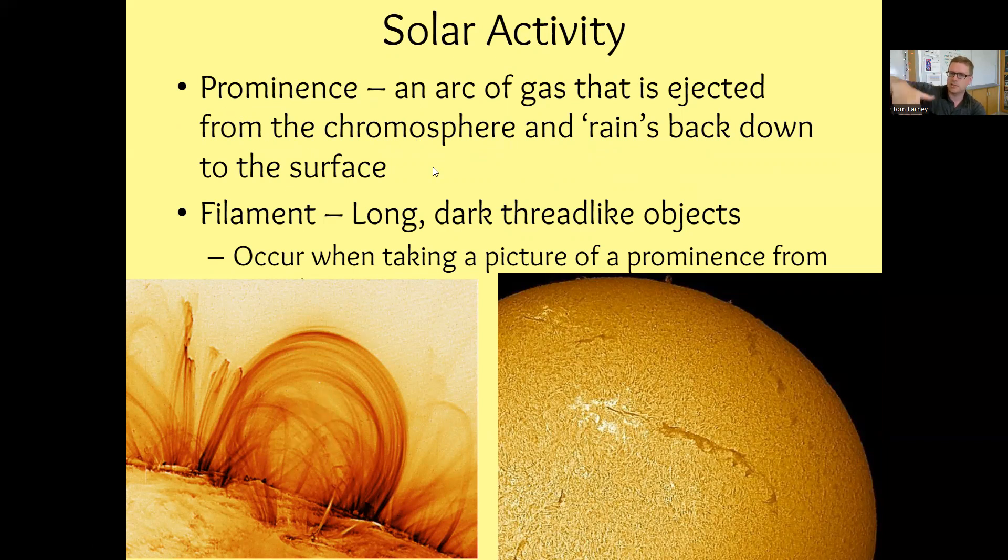A couple last little things from the surface of the sun here. One's called a prominence, pictured left here. It's an arc of gas that's ejected from the chromosphere and it rains back down to the surface. So whereas a solar flare just kind of bursts off into space, a prominence will kind of arc up and then back down to the surface here. So not quite flaring all the way out into space, it's kind of arcing out and then back down. And then these really long dark things on the right picture that almost look like scars, they're called filaments.